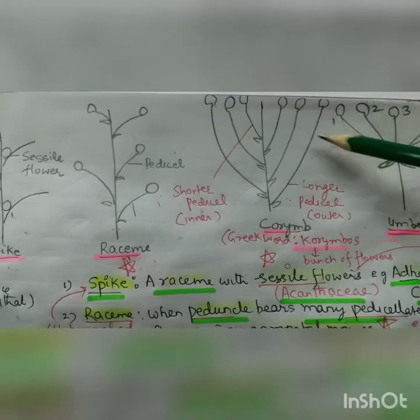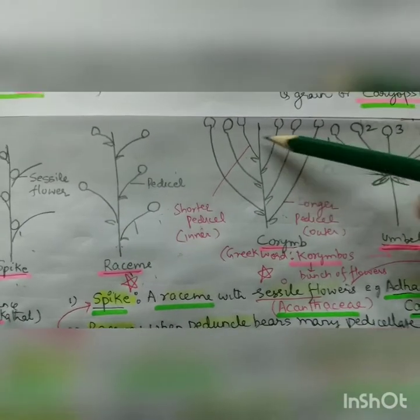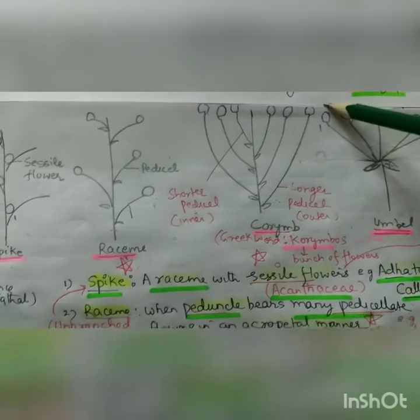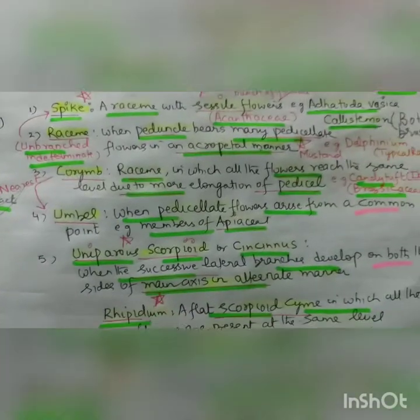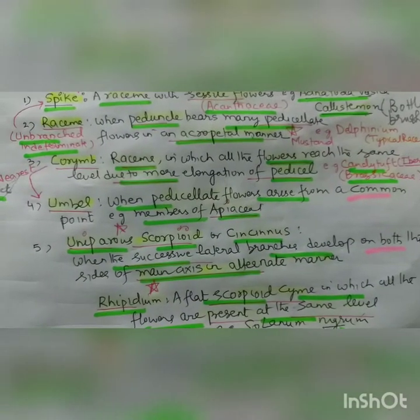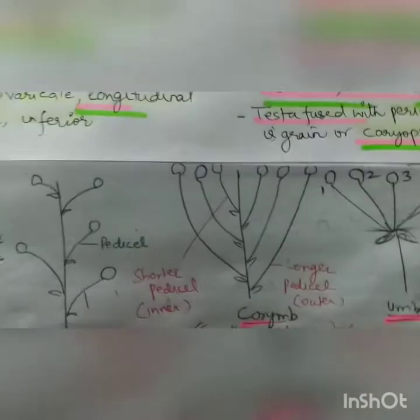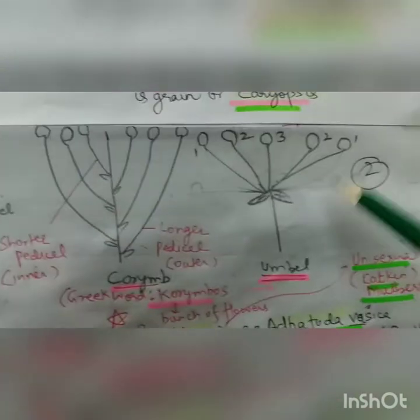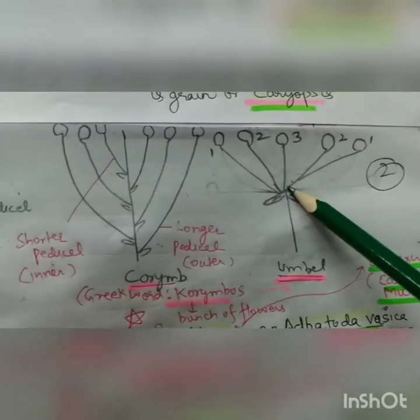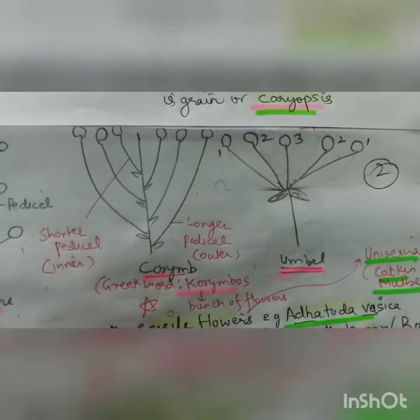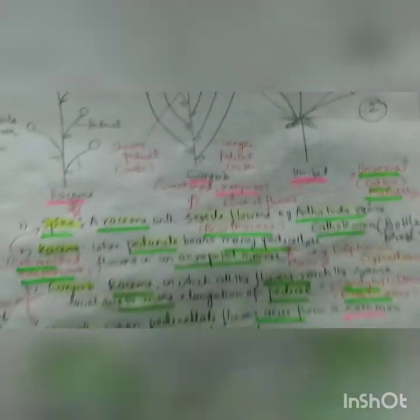In a corymb, the outer pedicels are longer and the inner ones are smaller, and they all reach at the same plane. The next type is where pedicellate flowers arise from a common point - it is a member of the main axis elongated group.